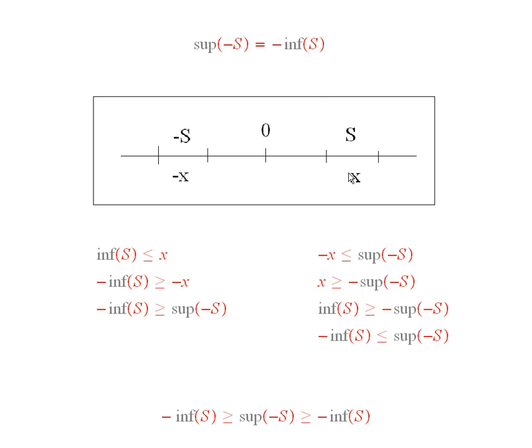To help keep the ideas straight, it's nice to look at a little picture like this. So, the typical thing in S is going to be called x. Therefore, the typical thing in minus S would be minus x.